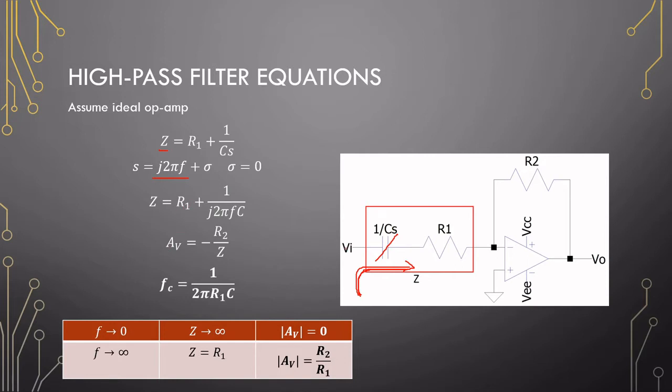Since we are dealing with an inverting amplifier configuration here, the gain of this is minus R2 over Z. So technically, we are dividing by an extremely large value. The gain will tend to go to 0. In the case where we make the frequency infinite, this term will go to 0, and R1 will remain, so the gain will be R2 over R1 in this case.